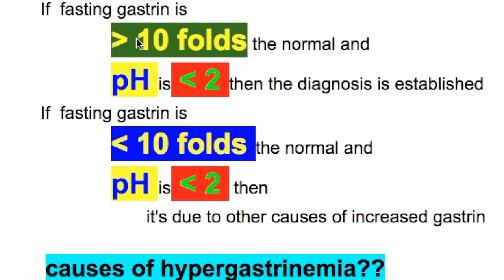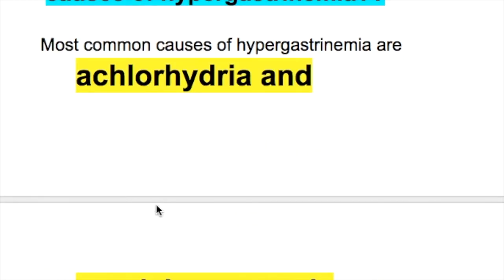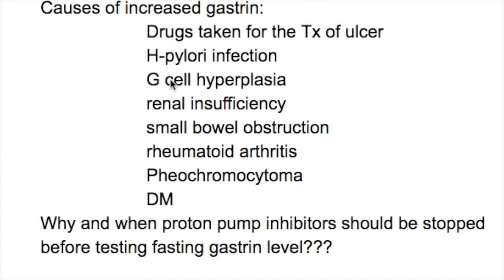In both scenarios pH is less than 2, but the gastrin elevation differs. What are the causes of hypergastrinemia? The most common causes are achlorhydria and pernicious anemia, in which gastric mucosal atrophy prevents HCl production. Other causes include drugs for ulcer and H. pylori treatment, G-cell hyperplasia, renal insufficiency, small bowel obstruction, rheumatoid conditions, pheochromocytoma, and diabetes.